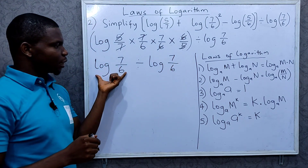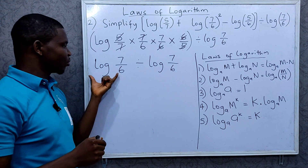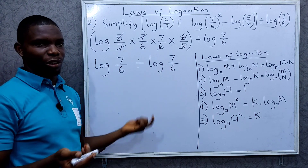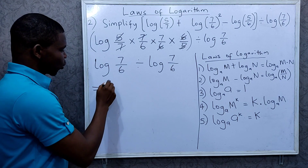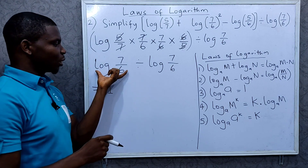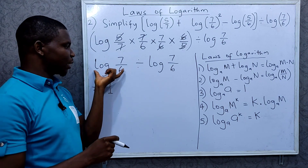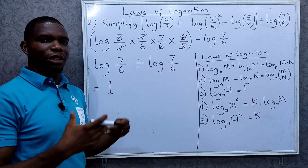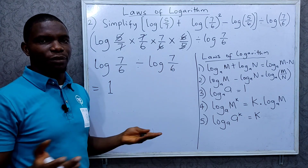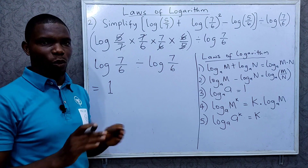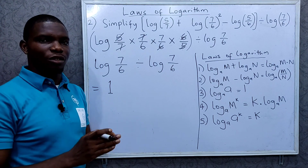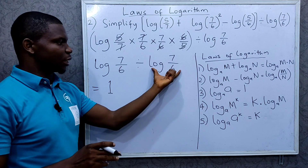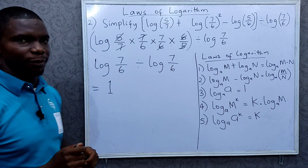We've finished with what's inside the brackets and have log of 7 over 6, divided by log of 7 over 6. These are the same thing. When you divide a number by itself, you get 1. It doesn't matter what the value is — 0.1 divided by 0.1 is 1, 100 divided by 100 is 1. So this divided by this equals 1.